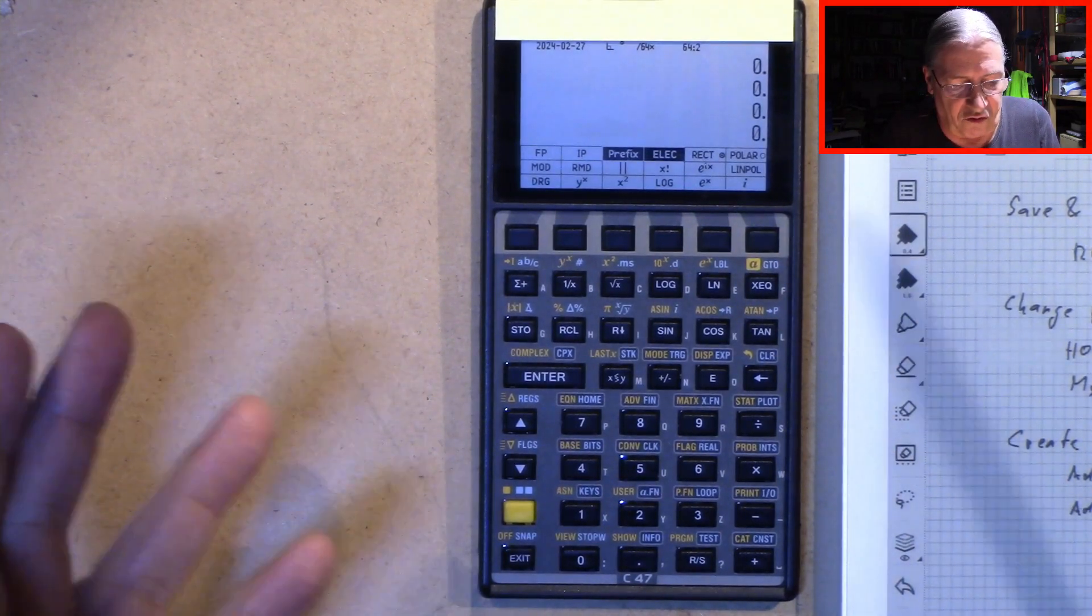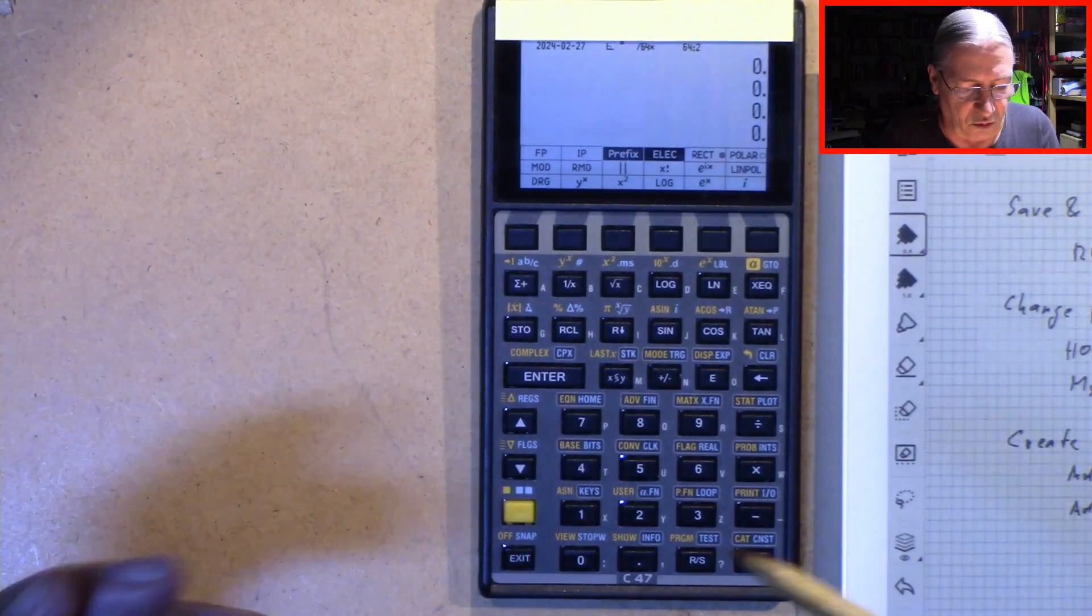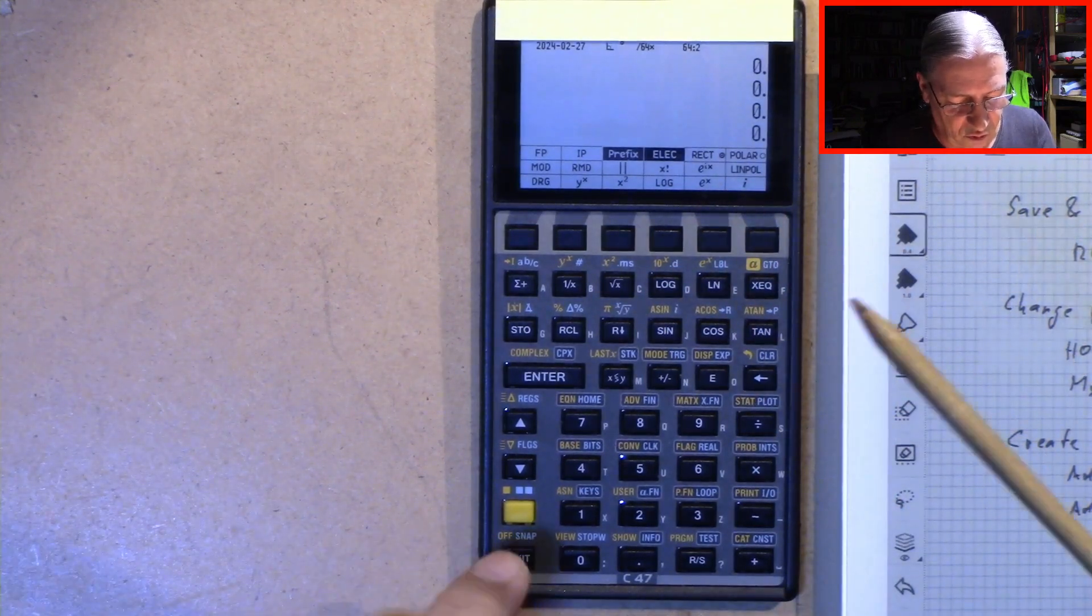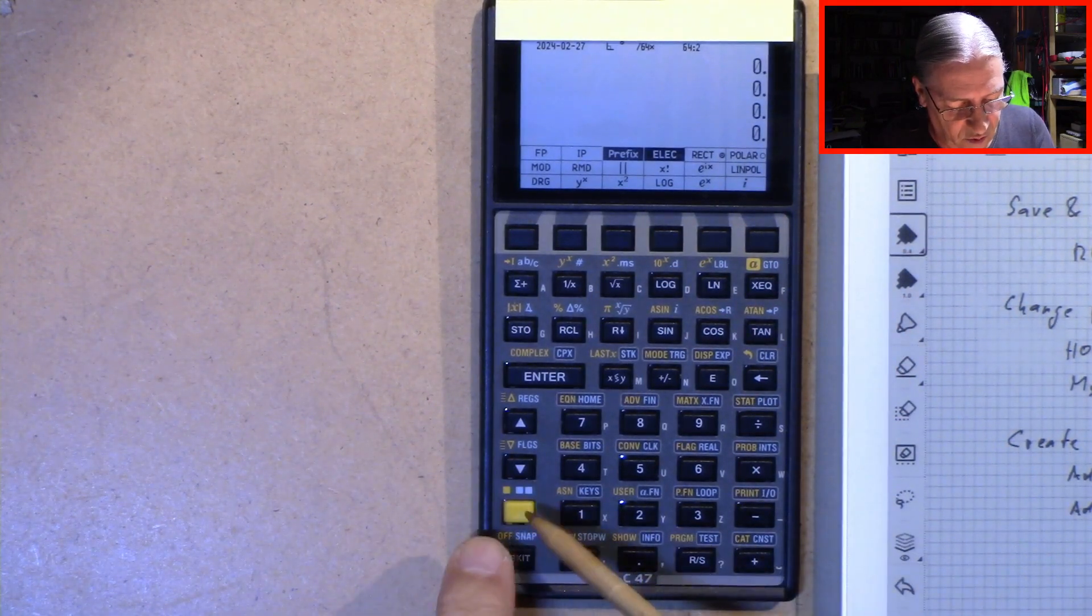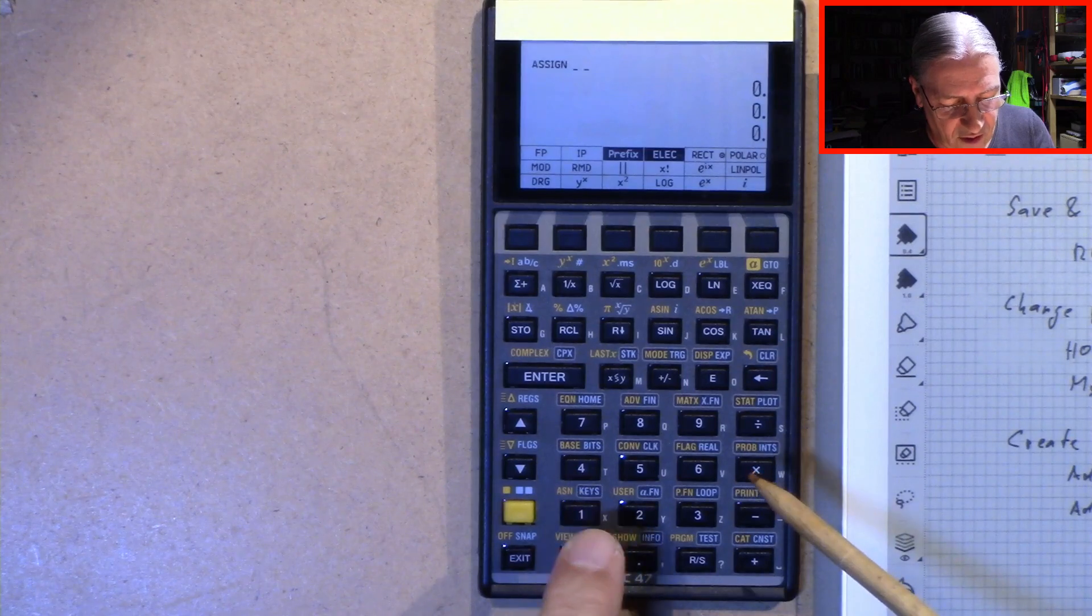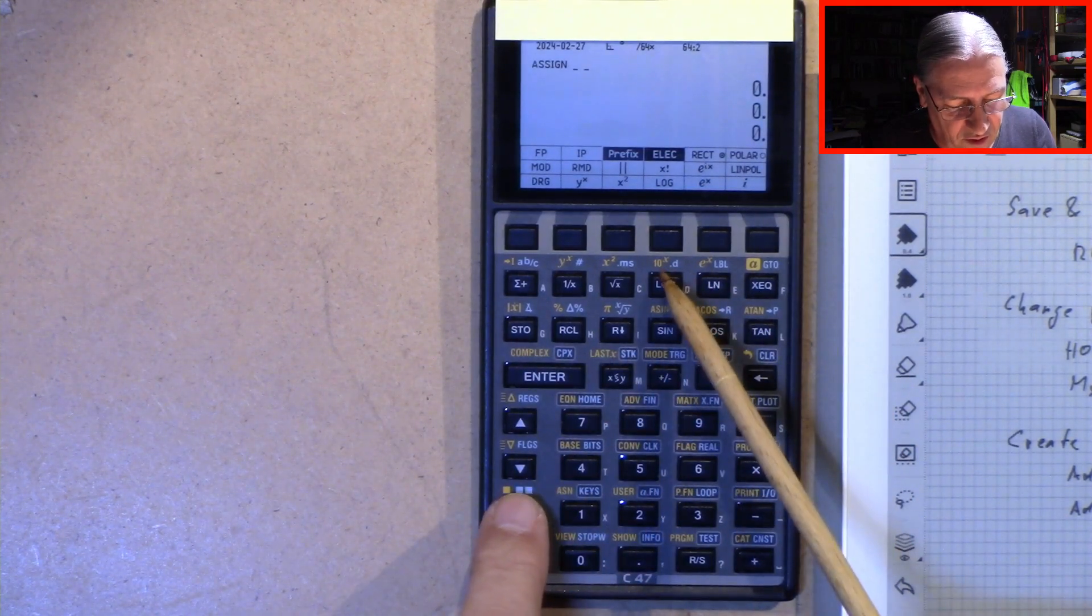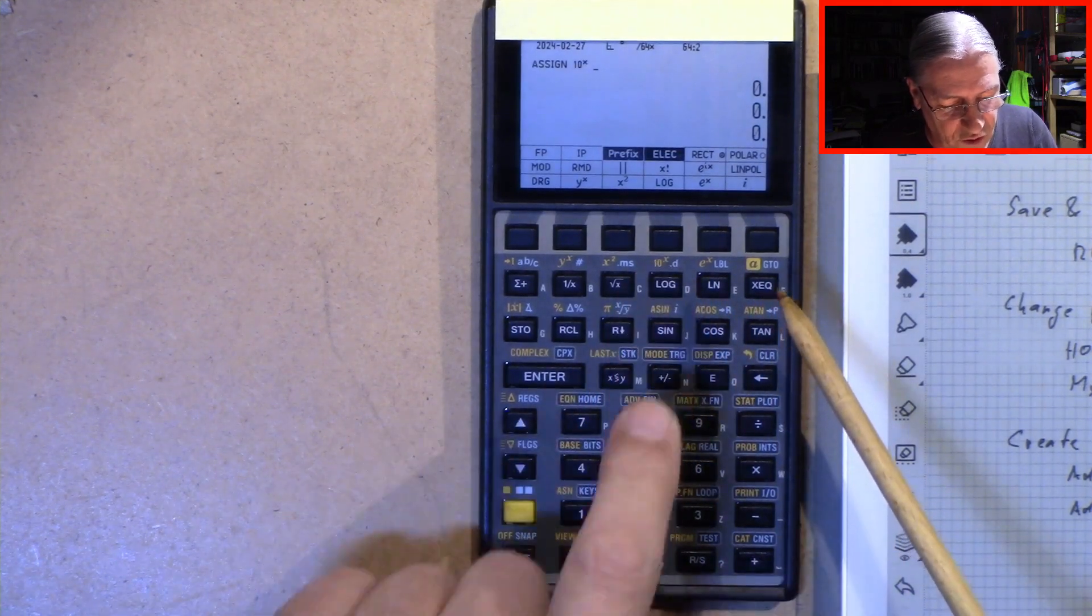Again, if you say, okay, this wasn't a good idea, I leave this as it is, we can do the same again. We press shift, assign. Then shift for the 10 to the power of x function.